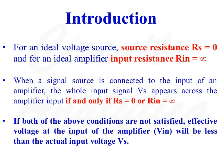For an ideal voltage source, source resistance RS is equal to zero. And for an ideal amplifier, input resistance RIN is equal to infinity. When a signal source is connected to the input of an amplifier, the whole input signal VS appears across the amplifier input if and only if RS is equal to zero or RIN is equal to infinity.